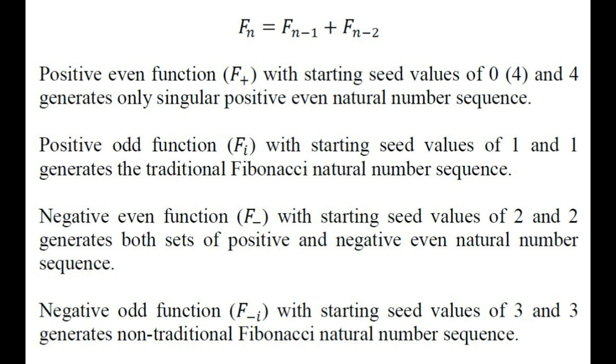Positive odd function Fi with starting seed values of 1 and 1 generates the traditional Fibonacci natural number sequence: 1, 1, 2, 3, 5, 8, and so on.